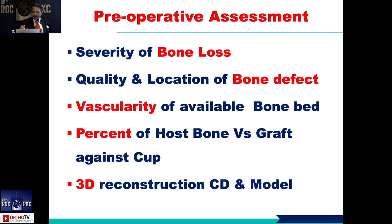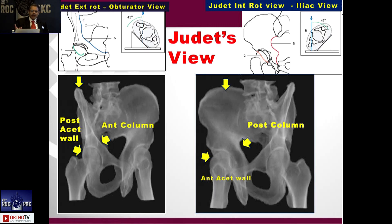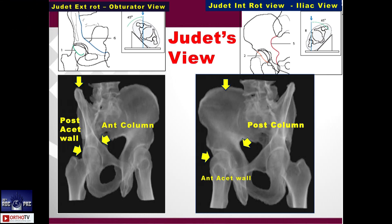Assess the bone loss — the quality, location, and vascularity. Intraoperatively, check vascularity; sclerotic bone should be removed. Assess the percentage of host bone contact. These are key intraoperative assessments. The Judet views are basic: with the obturator view you see the anterior column and posterior wall, and with the iliac view you see the posterior column and anterior wall.